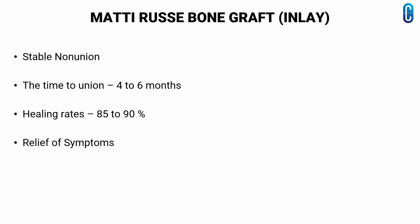The Matti-Russe bone grafting is an inlay bone grafting technique used for stable nonunions. The time to union with this procedure is relatively long, generally requiring cast immobilization for 4 to 6 months. Healing rates of 85 to 90% have been reported, and satisfactory relief of symptoms is seen.